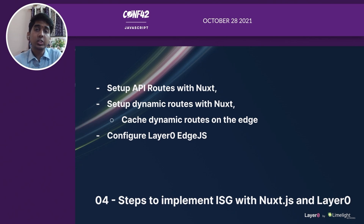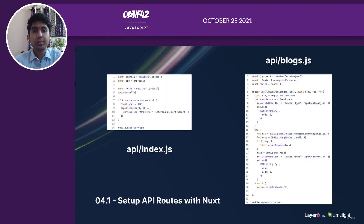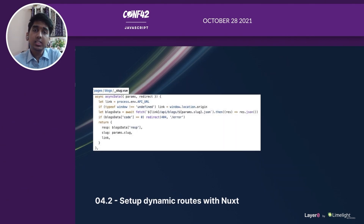Now that you've seen ISG with Nuxt live in action, let's go through the implementation steps. The first step is to set up API routes with Nuxt, which you can do by using the server middleware property in nuxt.config. You can link it to a custom Express server and use that for data fetching. The next step is to set up dynamic pages in Nuxt — just create pages/blog/_slug.vue and you're done. For data fetching, I use asyncData, which will either block client-side navigation or server-side render the request so that users only see the page when it's built. With Layer 0 deployment, you get access to an environment variable known as API_URL, which you can use to server-side fetch the data.